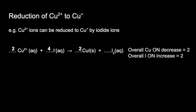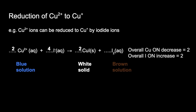For the colour changes: we start with aqueous Cu²⁺ ions, which are blue. Copper 1 compounds — solid copper 1 iodide — are white because Cu⁺ has a 3d¹⁰ configuration, so with a full 3d subshell there's no colour. Iodine solution is brown. So the observation is blue solution to white solid and brown solution.